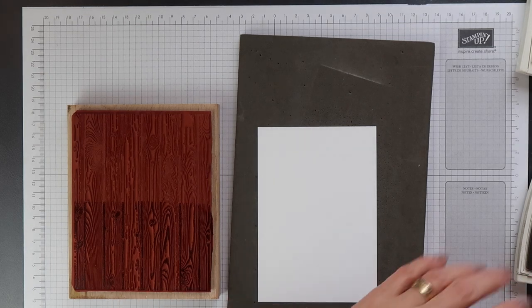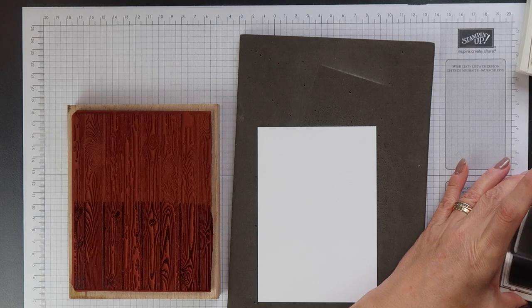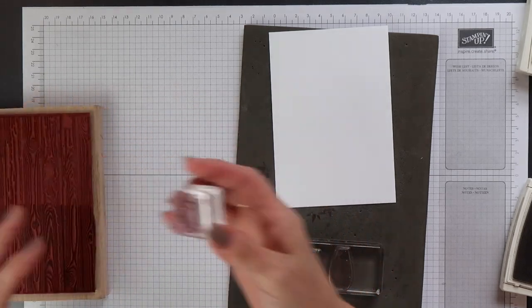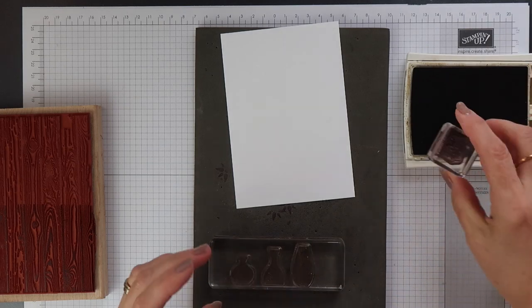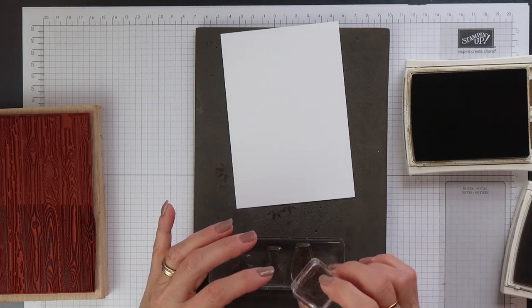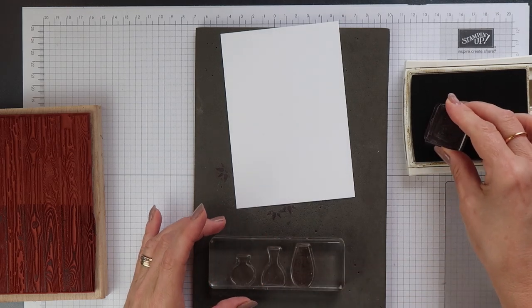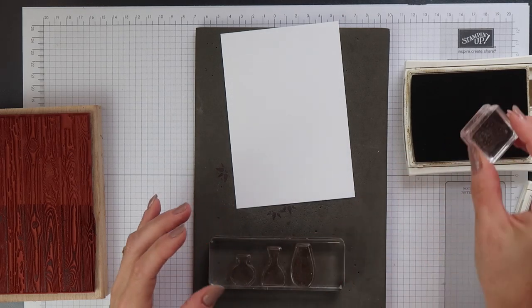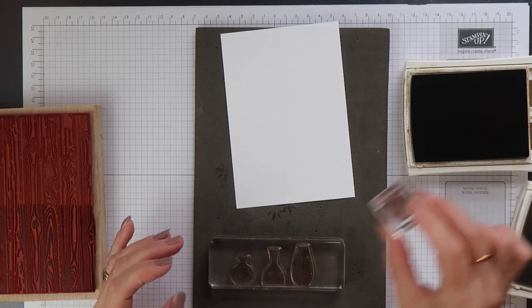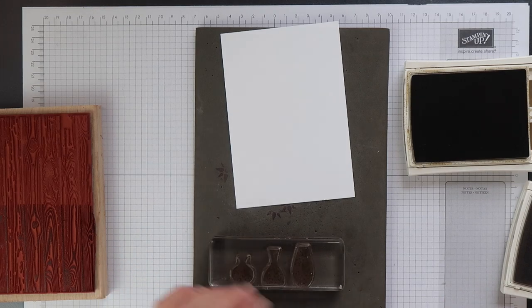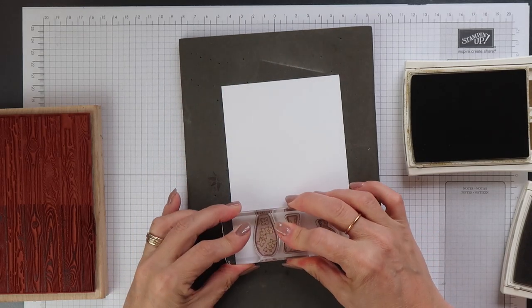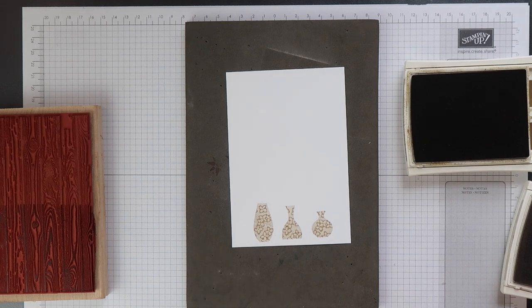Now I just thought I'd show you that your pattern stamp does not have to be a large background stamp to get this technique to work. I'm inking up my vases again using the Sahara Sand and I've got this tiny floral stamp that I'm going to use. So I'm going to ink that up using Soft Suede and then carefully kiss the two stamps together to transfer that pattern onto the vases. Now again you have to be very careful that the images don't slip when you kiss them together. And then I'm just going to huff on that stamp just in case the ink has started to dry underneath and then I can stamp my images down.